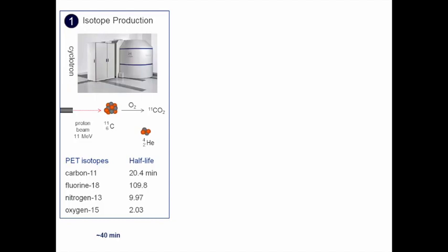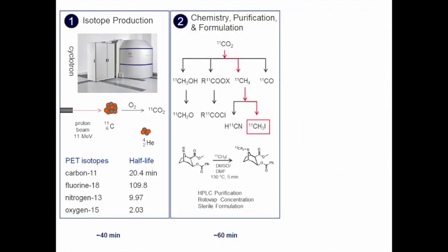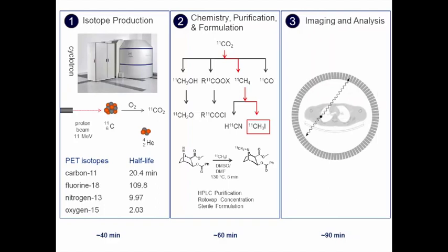Once you have produced your radioisotope, you're running on a clock. With C-11 and its 20-minute half-life, every 20 minutes you lose half your activity. You've got to be fast, because you still have to take that isotope and attach it to a biomolecule using chemistry, purification, and formulation. It has to be a sterile formulation to be injectable into a patient. Then you take a given amount of radioactivity from the production and inject it into your subject, from which you can acquire the images.